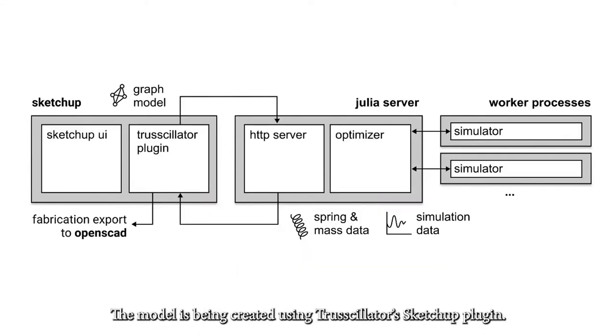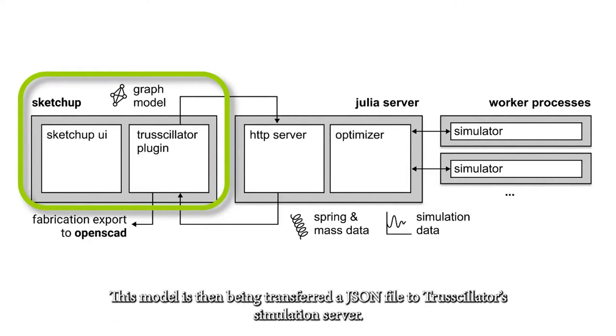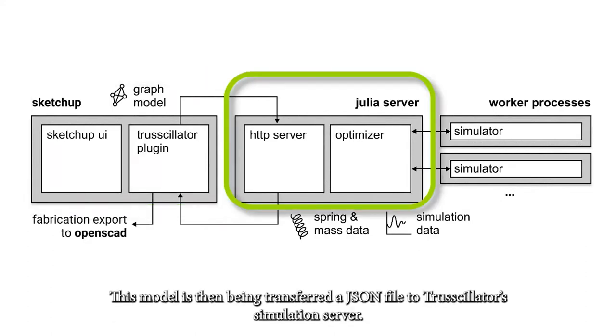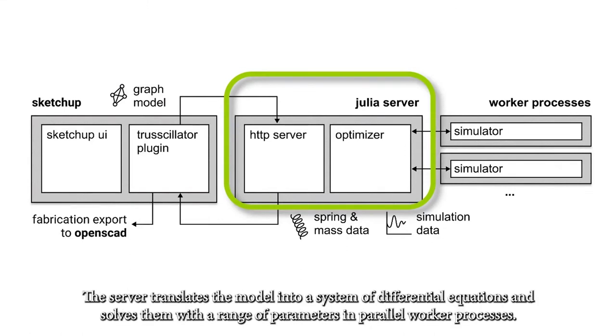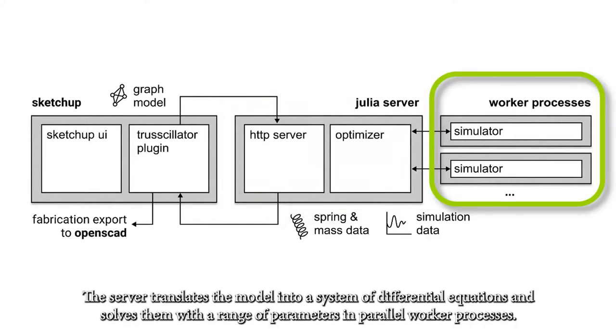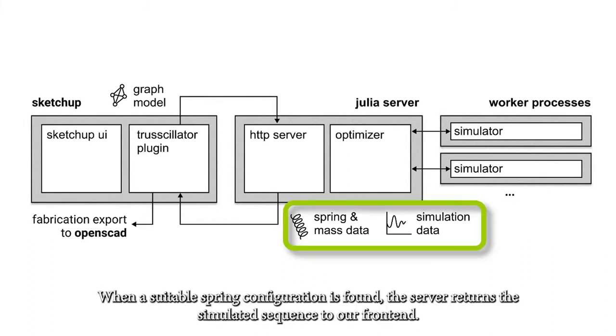The model is being created using Trussillator's SketchUp plugin. This model is then being transferred as a JSON file to Trussillator's simulation server. The server translates the model into a system of differential equations and solves them with a range of parameters in parallel worker processes. When a suitable spring configuration is found, the server then returns the simulated sequence to the frontend.